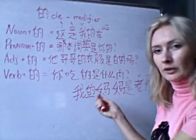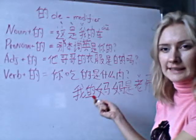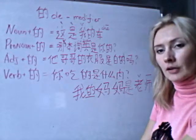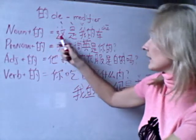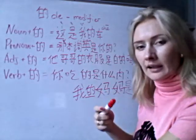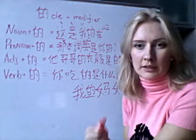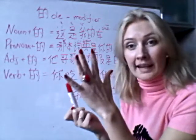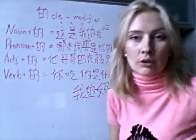Of course, if you put 的 it will not be a mistake, but at the same time you don't need to put too much 的 in the sentence. So 我妈妈是老师 or 我的妈妈是老师 — 一样的, it's the same. So here I showed you a noun plus 的. 这是我的车 — 'this is my car.' Noun plus 的 shows the belonging of things to somebody. So this car belongs to me: 我的车, 我的笔, 我的手 (my hand), 我的脸 (my face), 我的朋友 (my friend).